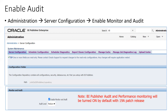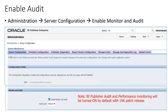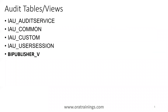This is how you can enable auditing — and we've seen how to create a data source. Auditing is enabled by default, you don't need to do anything. Now, from where do we get the data? There are a set of tables or views available — the IAU set of tables for BIP — which has all the information about your auditing. The major important one is the bi_publisher_V view. We do not refer to the underlying tables directly, because Oracle has already created a view for us. We just need to refer to this view to get all the auditing information.